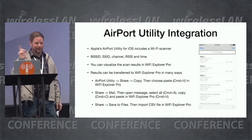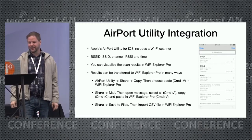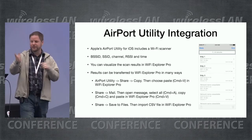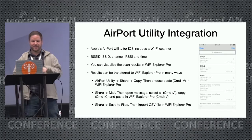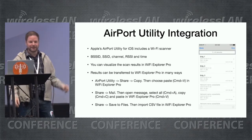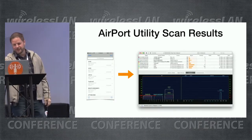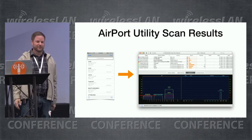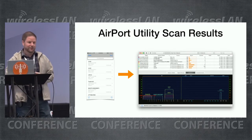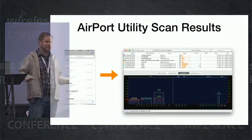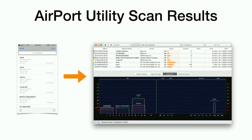The Airport Utility integration was something Eric and an Apple guy asked about. In the Airport Utility iOS app, you scan, then tap the Share button and choose Copy. You switch to your Mac, paste the results, and you can see them in Wi-Fi Explorer in the same layout as a normal Mac scan. You can also send results in an email — the recipient does Select All, pastes it, and Wi-Fi Explorer automatically detects the scan data, ignores email signatures, and visualizes the data.